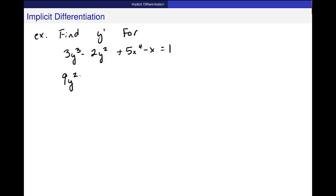So, again, this is 9y squared times y prime minus 4y times y prime plus 20x cubed minus 1 equals 0. Now, I identify the piece that I want to get by itself. That's y prime right here. These other pieces I need to move over somehow.